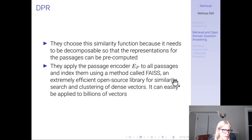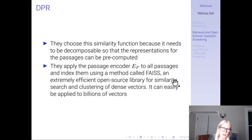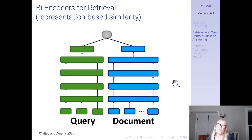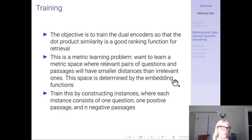They apply the passage encoder to all passages and index them using Facebook AI Similarity Search (FAISS), which is an extremely efficient open-source library for similarity search and clustering of dense vectors. It can easily be applied to billions of vectors. In our own work on detecting which news articles came from the same underlying wire source, we were able to make 10 to the 14th vector similarity calculations with FAISS in three hours on a single GPU card — so this is a very optimized way to make vector similarity calculations.